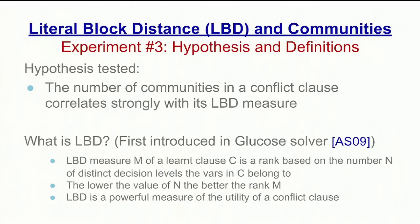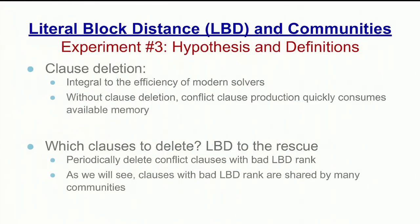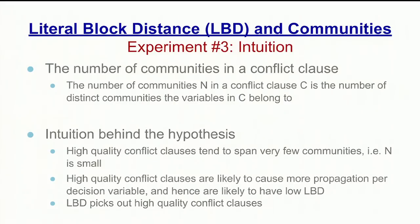A third result tested the hypothesis that the number of communities in a conflict clause is strongly correlated with the literal block distance (LBD) measure. The LBD was first introduced in the glucose solver and measures the distinct number of decision variables that a learned clause contains. The lower the number of decision variables, the better the rank of the clause. The LBD is a powerful measure of utility for a conflict clause, and modern SAT solvers create an enormous number of conflict clauses while solving — without clause deletion, these would quickly consume all available memory. The glucose solver periodically deletes clauses with a bad LBD rank. The number of communities in a conflict clause is defined as the distinct number of communities the variables in the clause belong to, similar to the LBD. Our intuition is that high-quality conflict clauses typically span very few communities and have a lower LBD.